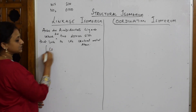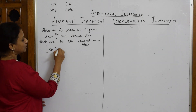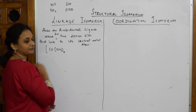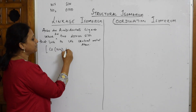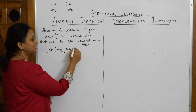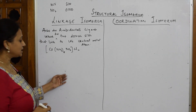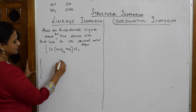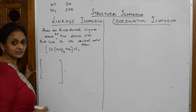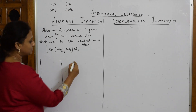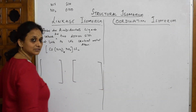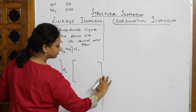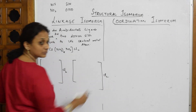Take the complex [Co(NH₃)₅(NO₂)]Cl₂. The coordination number is 5 + 1 = 6, so the shape is octahedral. Cl₂ is outside the coordination sphere. I'll draw two types of isomers for this complex.